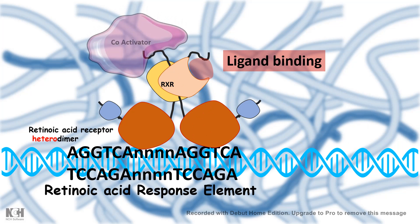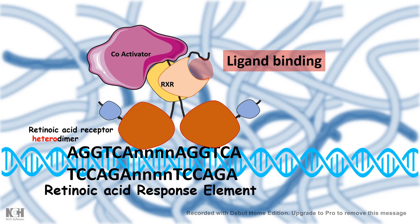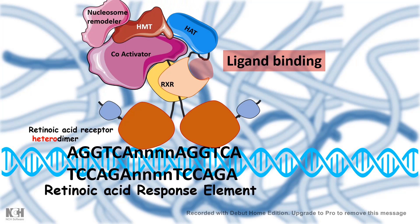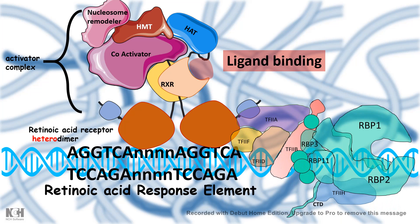Once the repressor complex is gone, in the presence of ligand, a co-activator can bind to the dimer. Along with the co-activator, histone acetyltransferase, histone methyltransferase, and nucleosome remodelers bind, forming an activator complex. Histone acetyltransferase acetylates histones making chromatin more accessible; histone methyltransferase adds activatory methylation marks; and nucleosome remodelers free up space for transcriptional start, allowing RNA polymerase II and general transcription factors to bind the promoter.